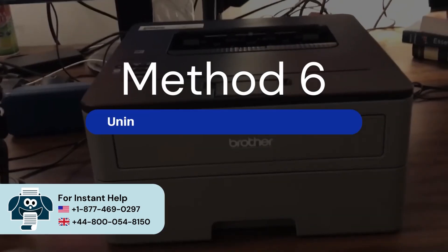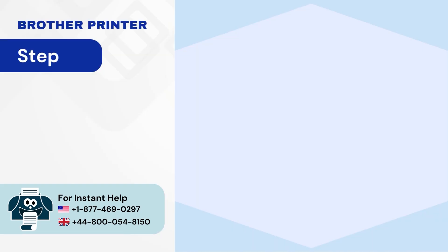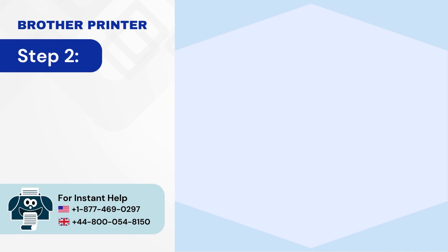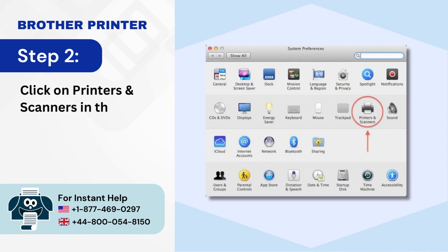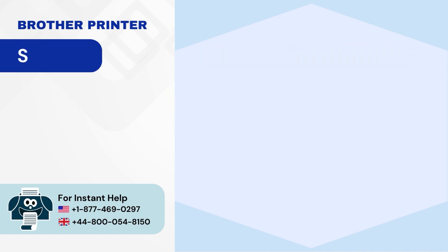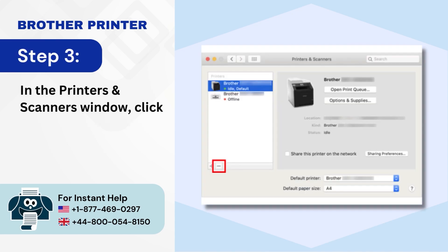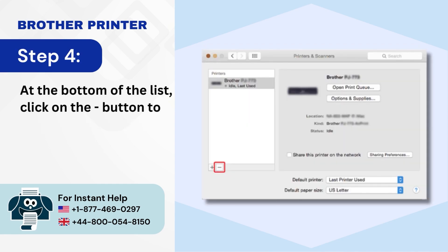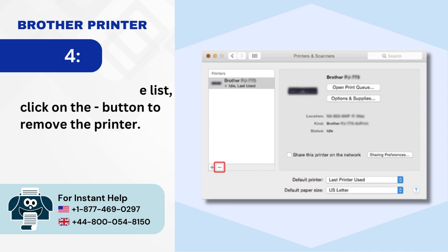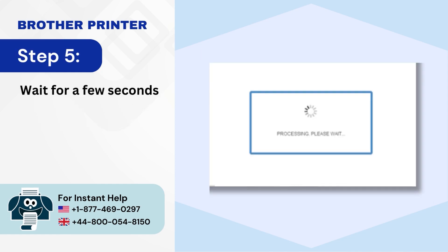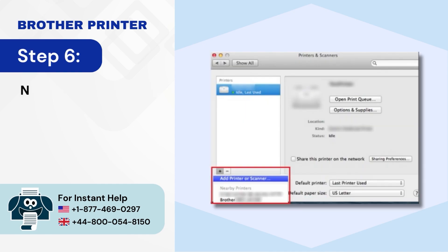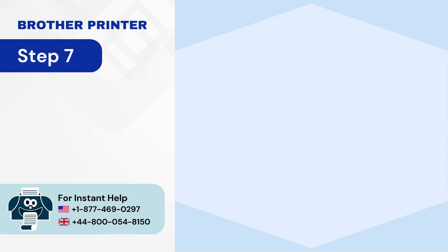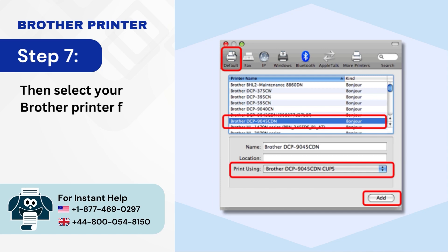Method 6: Uninstall and reinstall the Brother Printer. Step 1: Click on the Apple menu and select System Preferences. Step 2: Click on Printers and Scanners in the System Preferences screen. Step 3: In the Printers and Scanners window, click on your Brother Printer. Step 4: At the bottom of the list, click on that button to remove the printer. Step 5: Wait for a few seconds. Step 6: Now, click the Plus button and select Add Printer or Scanners. Step 7: Then select your Brother Printer from the list and click on Add.